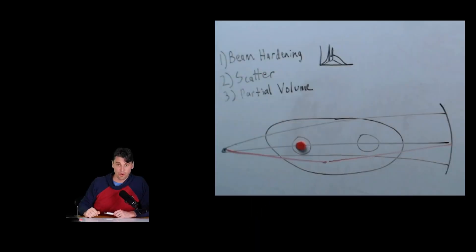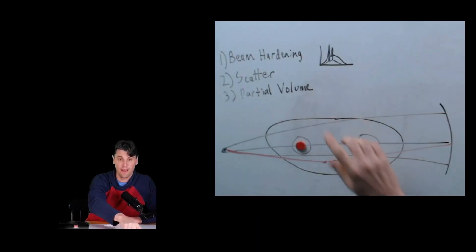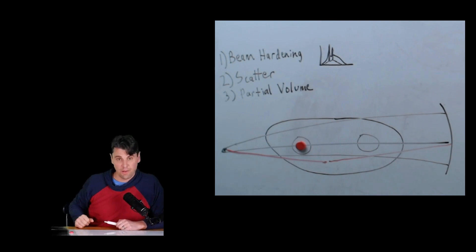Number three is what we call partial volume artifacts. The idea here is we're actually dealing with a nonlinear process in Beer's law, and we do a logarithm of the data in order to make it linear. But in the case where there's this significant amount of attenuation here and it's changing rapidly, that can cause what we call partial volume artifacts.